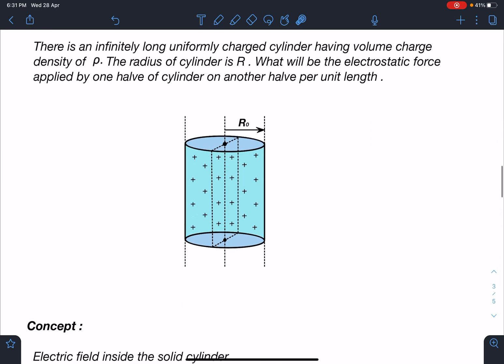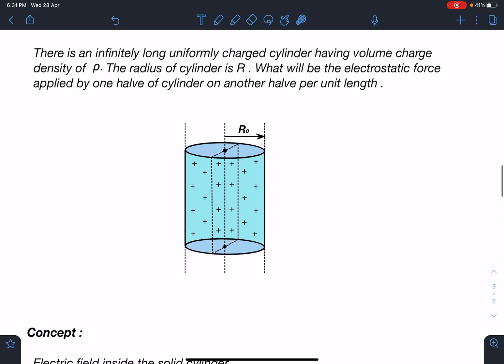Here is the statement of this problem. There is an infinitely long uniformly charged cylinder having volume charge density of rho. The radius of cylinder is R. What will be the electrostatic force applied by one half of the cylinder on another half per unit length? What we have to calculate here is force on this half of the cylinder applied by the rest of the cylinder here.